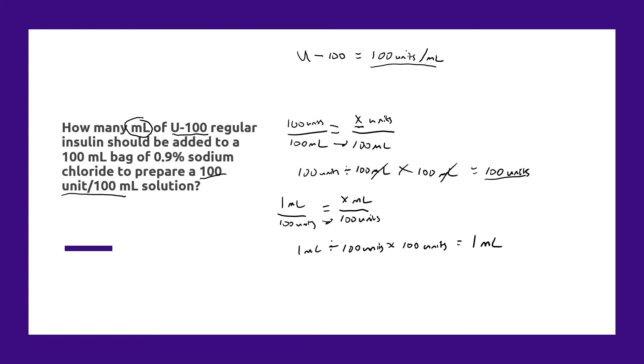With a high alert medication like insulin, that's probably not a bad idea. Most hospital policies are going to allow you to just add that 1 milliliter because it's just 1% overage. Some policies may be 5%. But again, whichever way you do it, this is the math behind figuring out how many milliliters of insulin you would add.